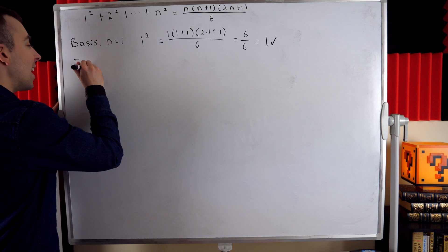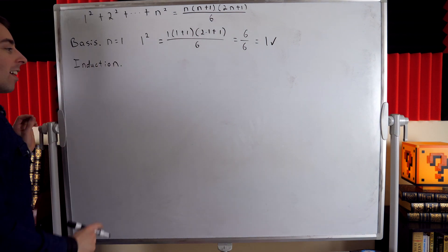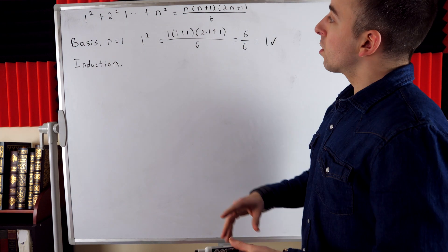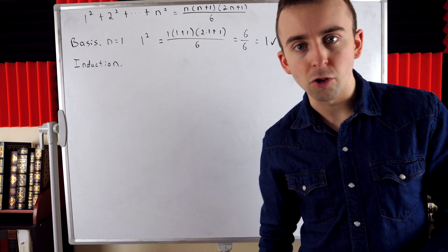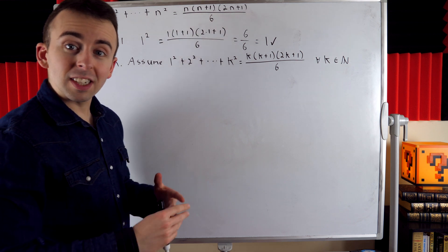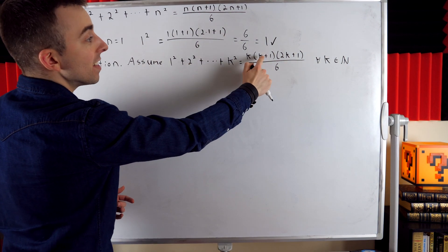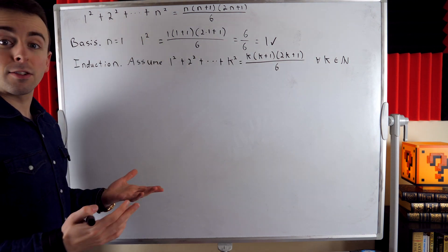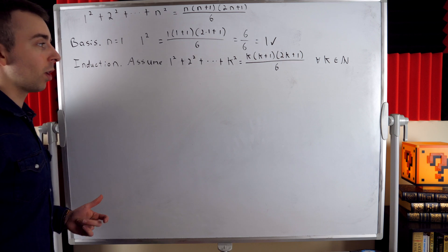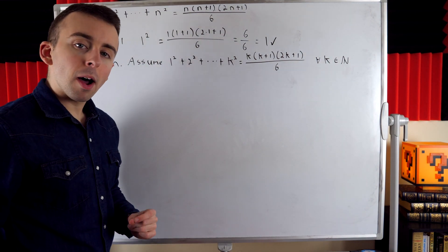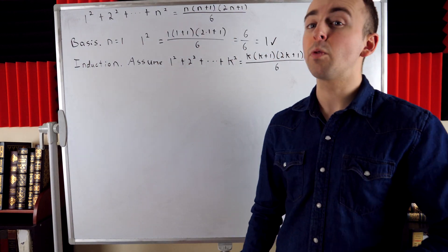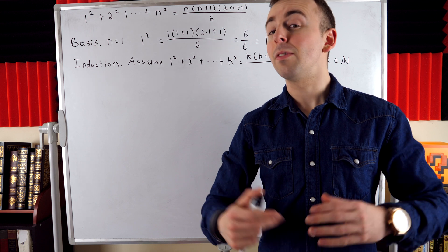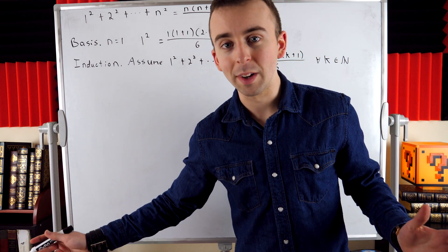Next, the main attraction of any induction proof is the induction step. In the induction step, we make an induction hypothesis — we assume that our result holds for some arbitrary positive integer k. This is valid because we already proved it's true for 1. Then we show this forces it to also be true for the next positive integer, k plus 1. Between the basis step and induction step, we've shown it's true for the first number and that truth propagates forward, proving it for all positive integers.